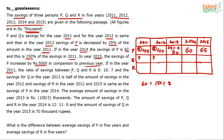In 2011, the ratio of savings of P:Q:R is 8:10:7. We know P's 2011 savings = 40, which corresponds to 8 parts. So each part = 5000. Therefore Q's 2011 savings = 10 parts = 50, and R's 2011 savings = 7 parts = 35.